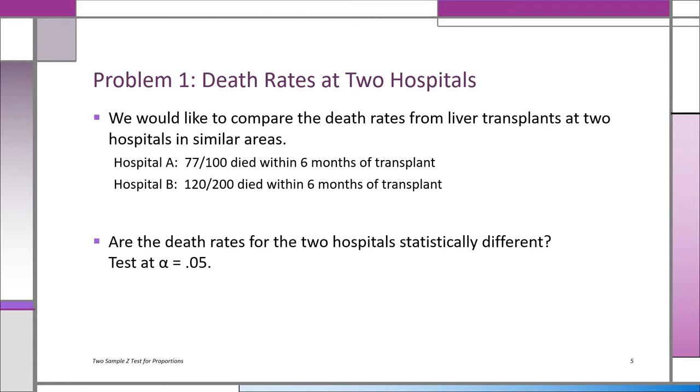Remember H₀ is that the two proportions are the same—that's why we pool it—because under H₀ we're saying that there's no difference, so we pool it. Now the question is, are the death rates for the two hospitals statistically different? We're going to test that at alpha equals 0.05. Now the sample sizes are large enough. In fact, combined it's 300 people, and this allows us to use the z approximation.